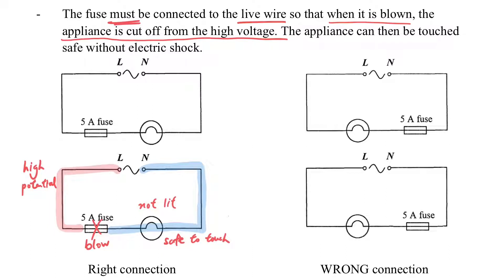However, if the fuse is connected to the neutral wire side, what will happen? Can it blow? Yes, it still can blow when the current is very high. However, after it blows, the electrical appliances is still on the live side, so it's still at the high potential.